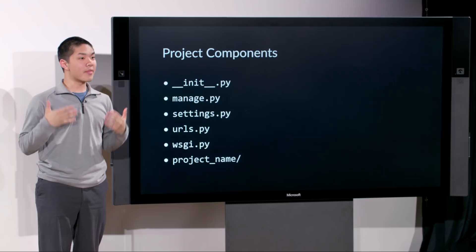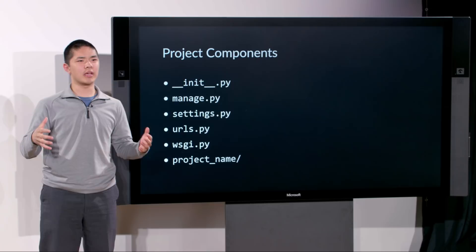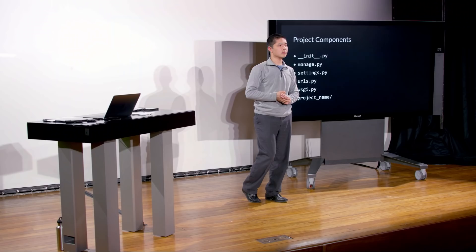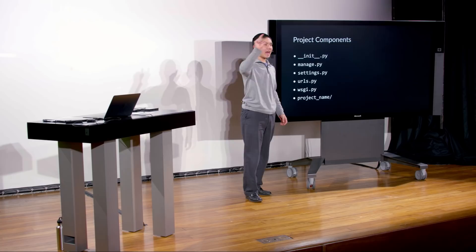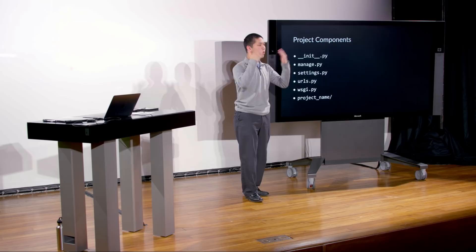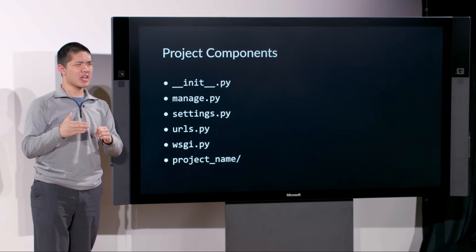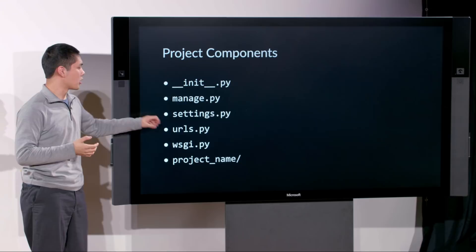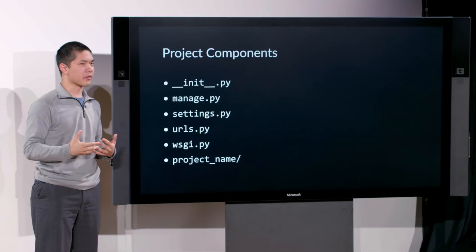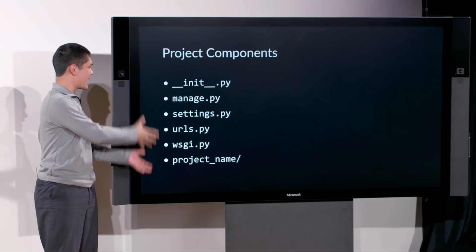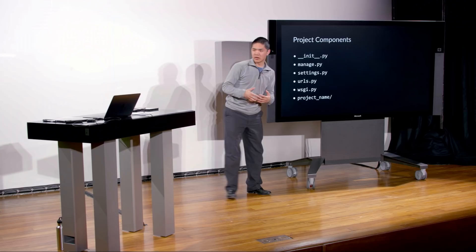URLs.py acts as the file that determines what URLs or routes the user can go to when they visit the web application. In Flask, we used a route decorator — at app.route followed by the route — associated with each function. What Django does is separate this functionality into two different places: one file called URLs.py that only contains the URLs people can go to, associated with the particular functions that run to render the response. WSGI.py, if you were to deploy a Django app to a web server, is a common way to allow that to happen.